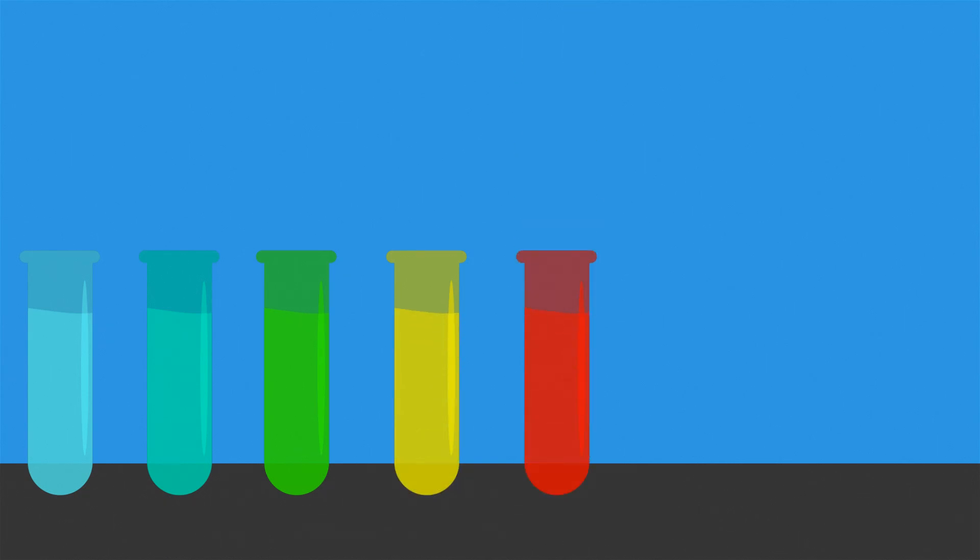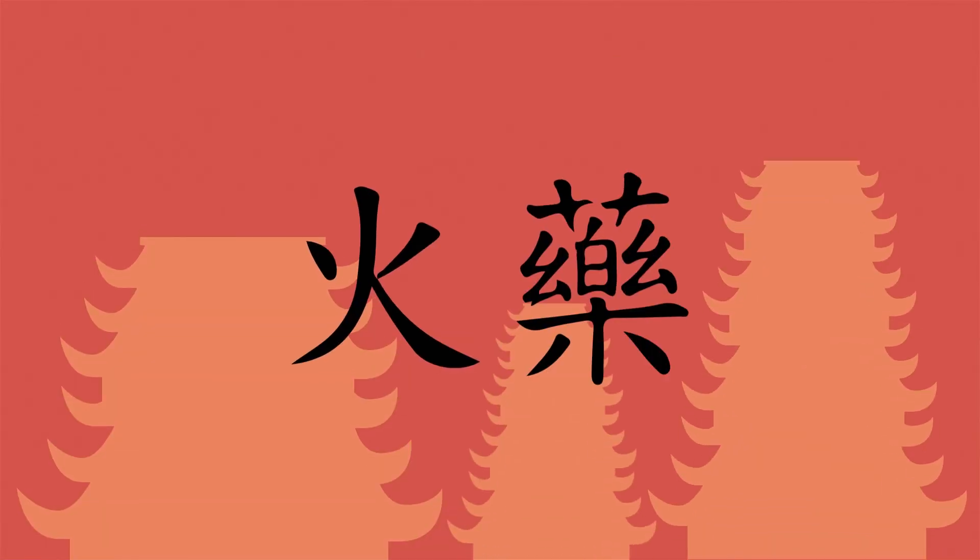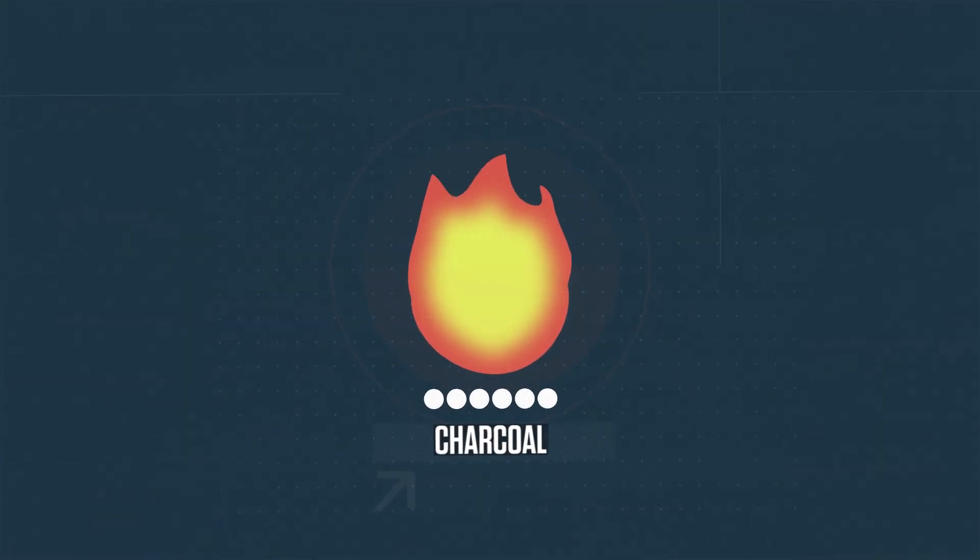But instead of lighter fluid, we add a dusting of ancient chemistry, potassium nitrate. In the 13th century, it was known as Chinese snow. A key ingredient of gunpowder and fireworks, KNO3 makes charcoal easy to ignite.